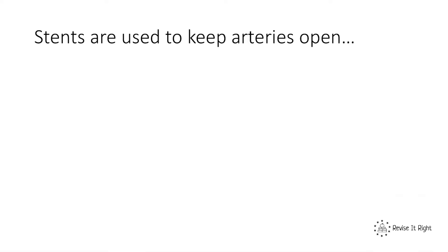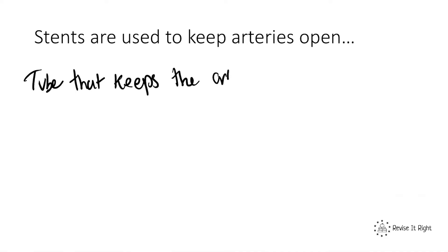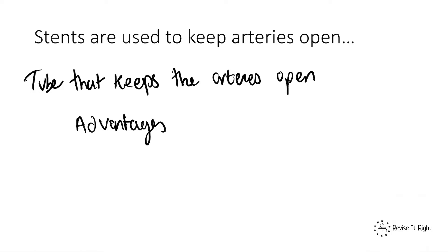We need to know the different treatments available for coronary heart disease. The first of which is a stent. A stent is essentially a metal tube that you place in the coronary artery that keeps the artery open. With most things in biology, we need to learn about the advantages and also the disadvantages of this method of treatment.